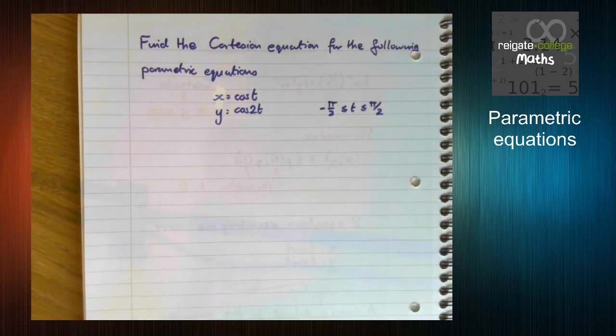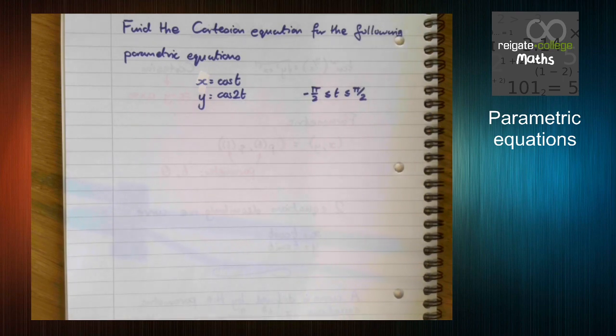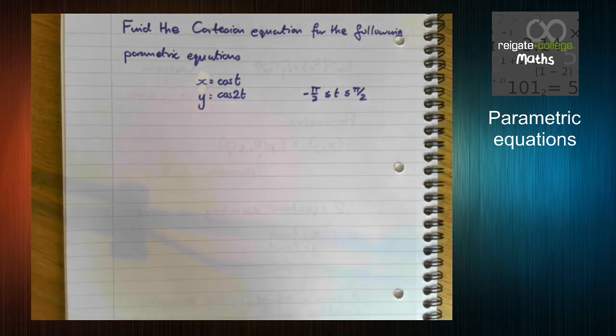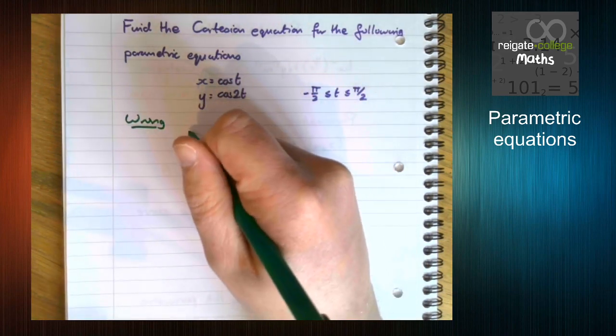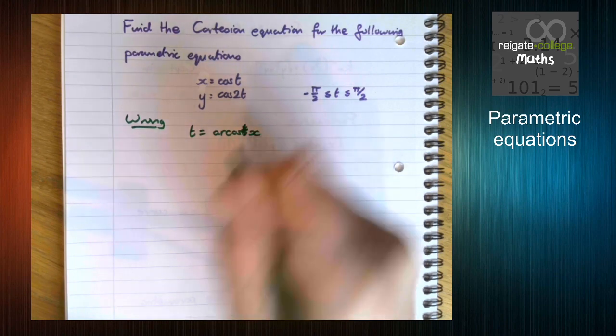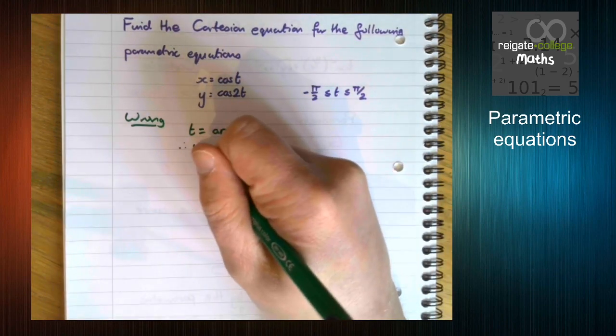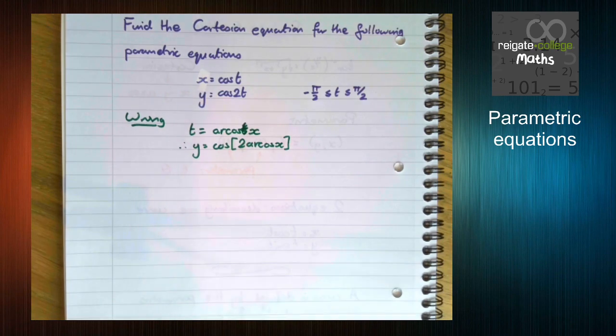Find the Cartesian equation for the following parametric equations. This time we've got some trigonometry in there. Now this is going to add an additional complication. With the previous example, we rearranged to make t the subject of one of the equations, but that's not going to be particularly nice. For instance, if we do this, we get t is inverse cos of x. So therefore y equals cos of 2 inverse cos x. Now that is correct,